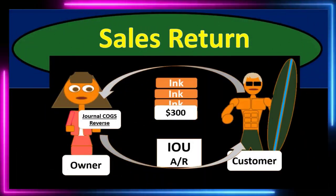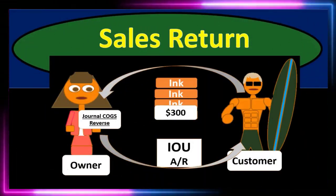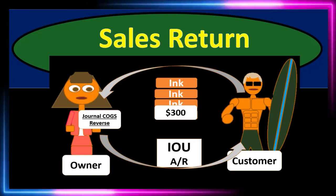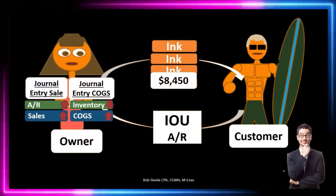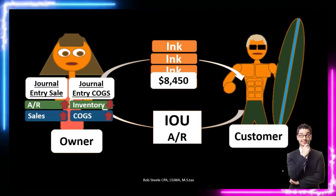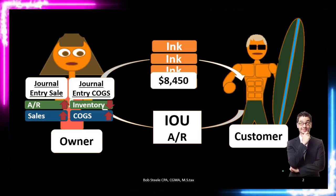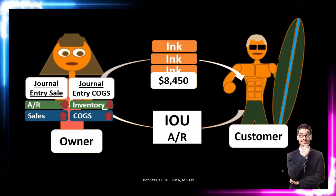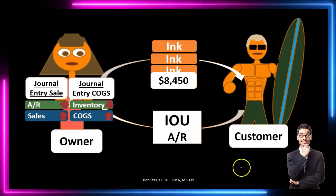In this presentation we will talk about sales returns and the transactions related to them — the debits and credits that will be recorded when merchandise is returned. In order to do this we first want to review the sale of merchandise journal entry, because when merchandise is returned we want to start from that journal entry and reverse it, making a few modifications.